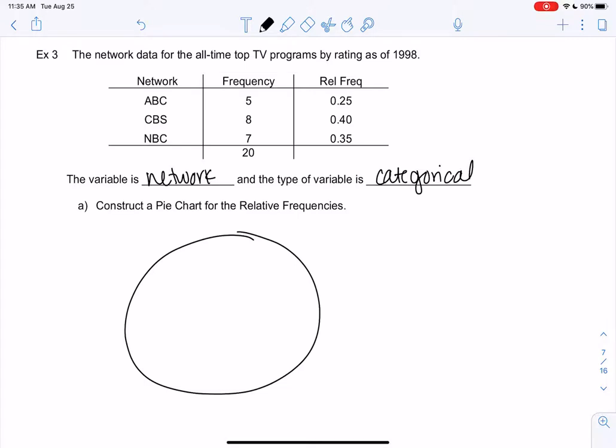And then we can make pie charts with categorical data, they don't really make that much sense for numerical data most of the time. So we prefer them for categorical. So I usually just do really light lines to maybe find quarters and then kind of erase them and guess. So ABC is 0.25, is 25%, so ABC would be exactly a quarter of this.